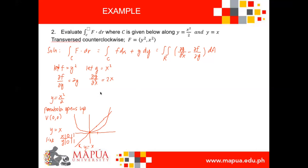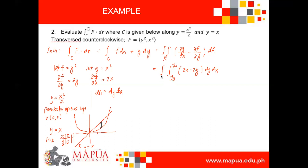The differential dA can be found by using a vertical strip, so dA equals dy dx. Now let us define and set up the integral. The partial of g with respect to x is 2x, and the partial of f with respect to y is 2y, with differential dA equal to dy dx. Defining the limits: for dy, we have y upper (y_u) and y lower (y_l); for dx, the lower limit is x left and the upper limit is x right.